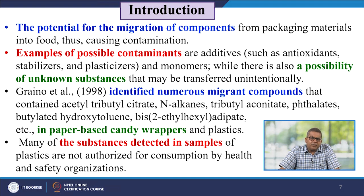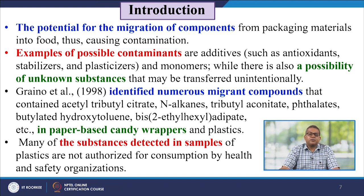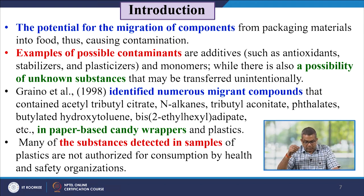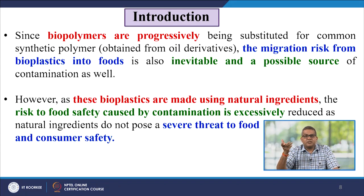Some scientists identified numerous migrant compounds including acetyl tributyl citrate, normal alkane, tributyl citrate, phthalates, and others. Many of these substances detected in plastic samples are not authorized for consumption by health and safety organizations. All these things play a very crucial role.